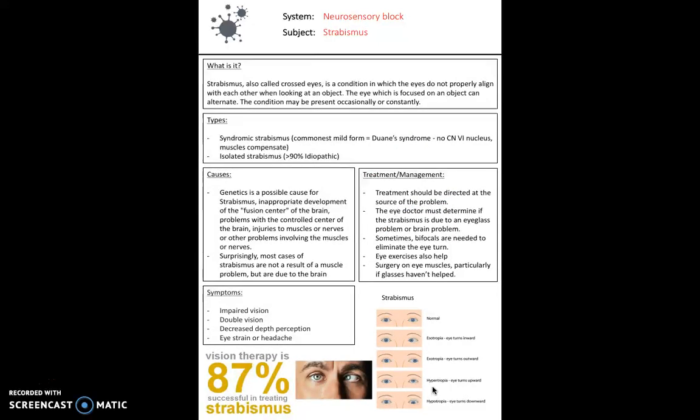Next, we look at strabismus, also called crossed eyes, which can be intermittent or constant. It is basically a failure of the two eyes to maintain proper alignment — one eye focuses on the object you're viewing while the other looks in an alternate direction, either upwards, downwards, or to either side.